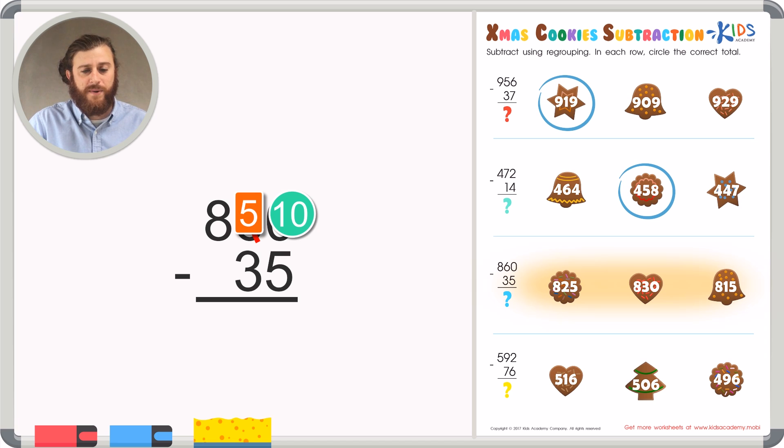Now we have 10 minus 5. That's an easy subtraction problem. 10 minus 5 is just 5. Subtracting from right to left. 5 minus 3 is 2. And 8 minus nothing is 8. Giving us a difference of 825. Our first answer choice.